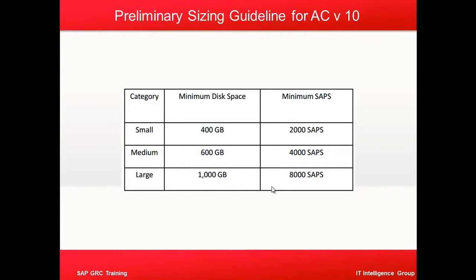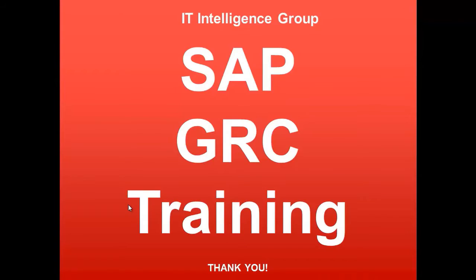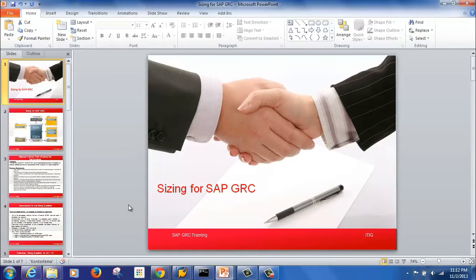For any SAP system, sizing is measured in the number of SAPS required. SAPS stands for SAP Application Performance Standard — a hardware-independent unit that describes the performance of a system configuration in an SAP environment. The SD benchmark is defined as 6,000 dialog steps and 2,000 postings, equaling 2,400 SAPS. These benchmarks are used to reflect capacity. Thank you for joining, have a nice day.